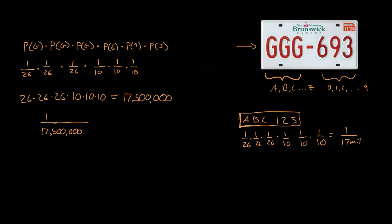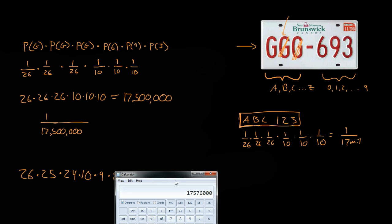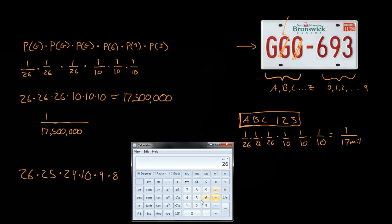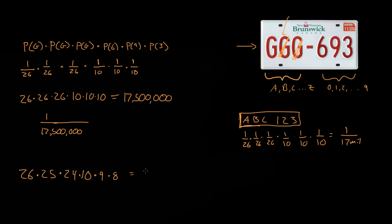Now let's say they decide to make it so license plates cannot repeat letters. So once the first letter is G, the second and third can't also be G. The first letter can be any of the 26 letters, the next can only be 25 since we can't repeat the first, and the next must be 24 since we can't repeat either of the first two. Then for digits, it could be any of the 10, the next only 9, and finally 8, since digits can't repeat either. So the total number of plates is 26 × 25 × 24 × 10 × 9 × 8, which equals 11 million.